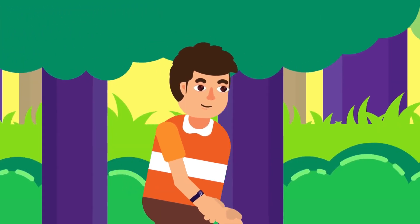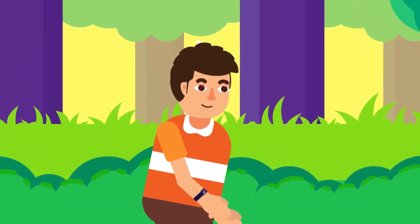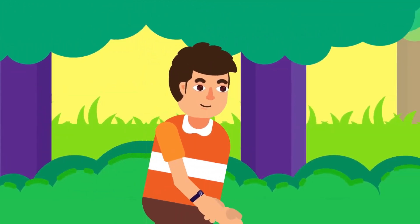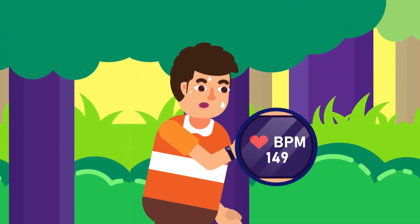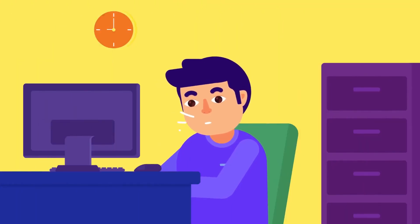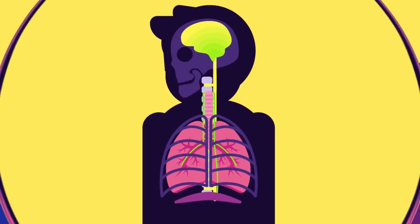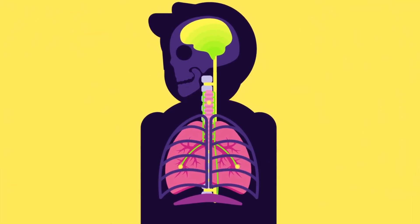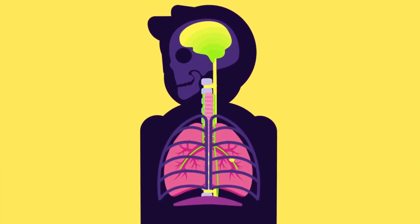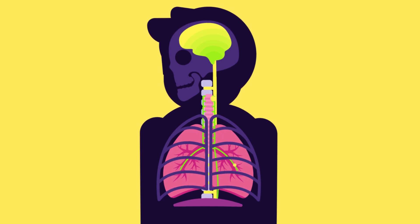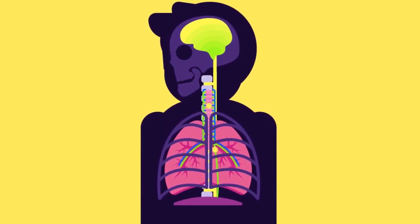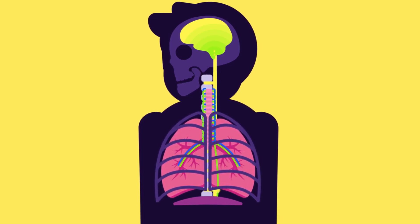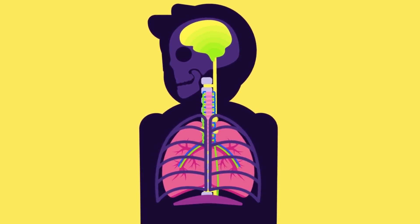Reflex arcs also govern a number of common body responses, especially those which are repeated — for example, breathing, blinking, heartbeat, sweat gland secretion, etc. Take a breath in right now and see how this works. As you breathe in, stretch receptors in the lungs stimulate the receptors in your reflex arc, which inhibit inspiration, and prevent the lungs from stretching far enough to cause damage. Then, after we finish inhaling, the expiratory neurons fire and expiration occurs. Normal breathing is thus maintained in part by a series of reflex actions.